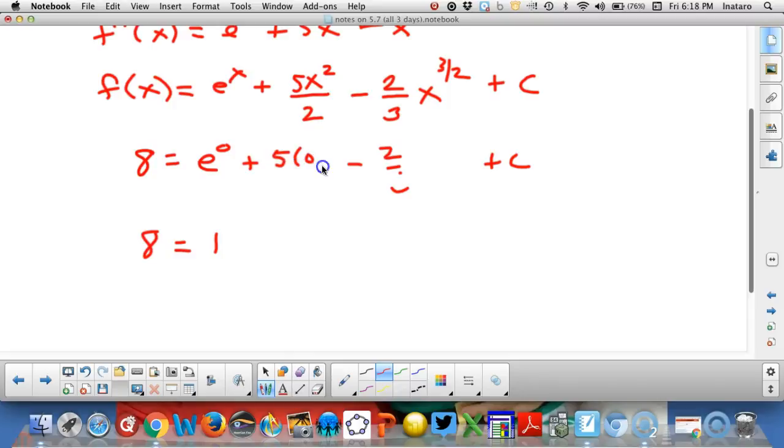We have 5 times 0 squared over 2. That's what you get when writing and talking at the same time. You make mistakes like that. Plus 0 minus 0 plus c. So I think we can see from this that c is equal to 7.